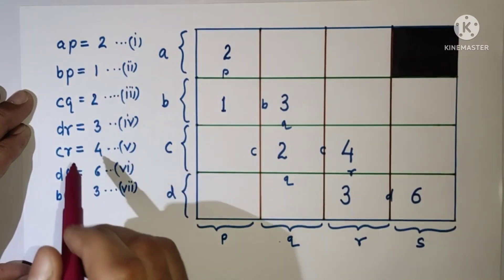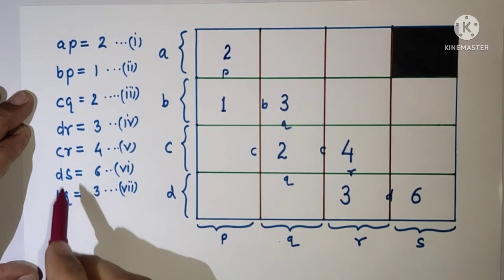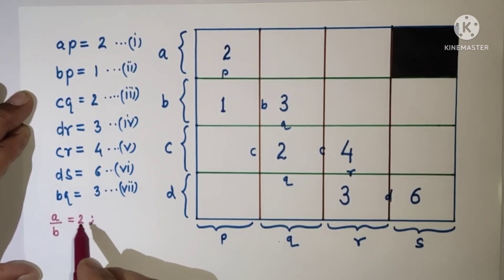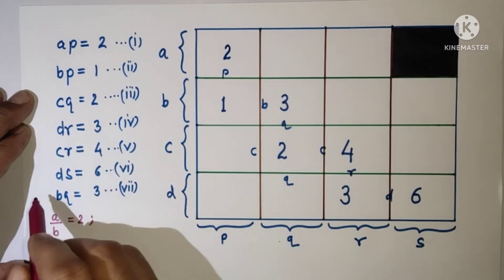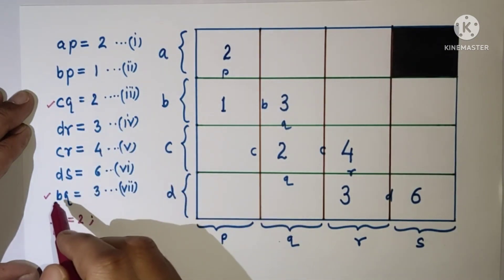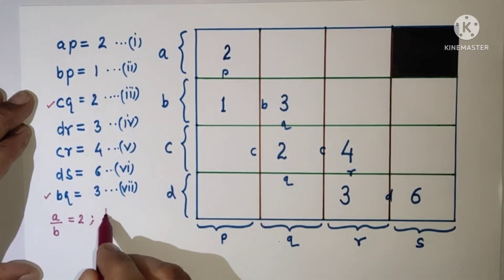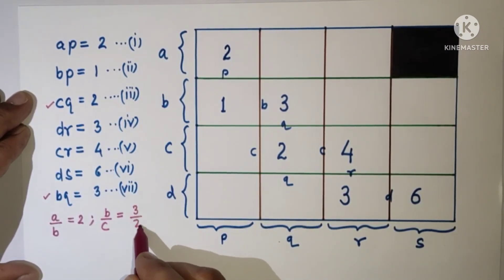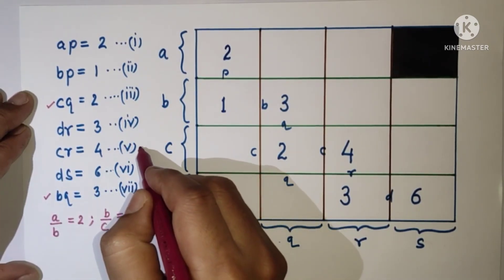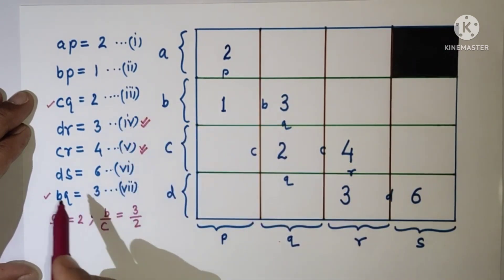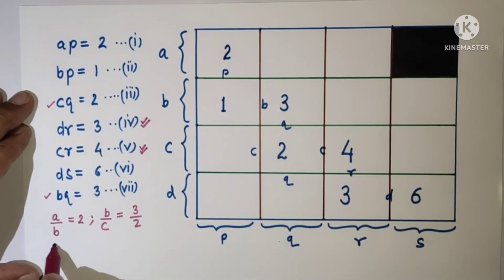From first divided by second, AP by BP is 2 by 1, so P cancelled, A by B is 2. From BQ by CQ, Q and Q cancelled, B by C is 3 by 2. From CR by DR, we will get C by D.